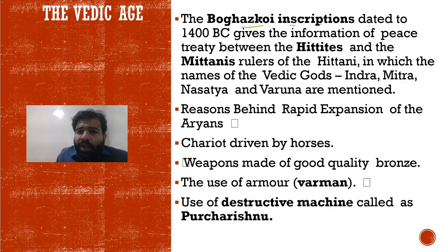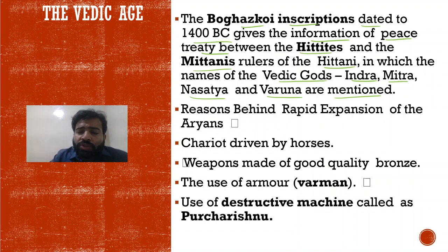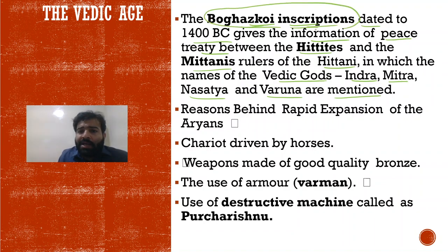The Bozkoy inscription, dated 1400 BC, gives information about a peace treaty between the Hittites and Mitani rulers. In it, the names of Vedic gods — Indra, Mitra, Nasatya, and Varuna — are all mentioned. So the Bozkoy inscription is one important source of information related to Vedic civilization.